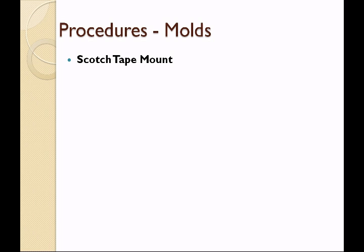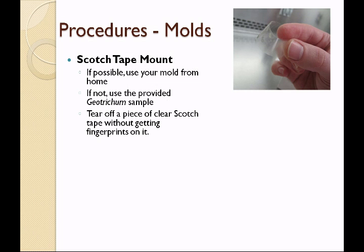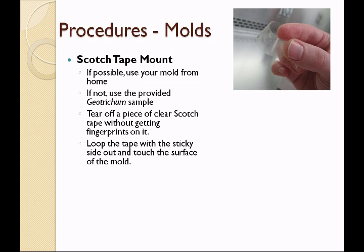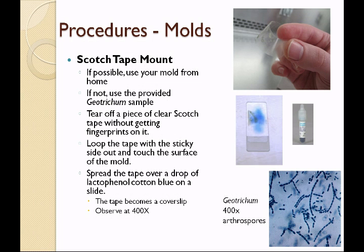You are also going to be preparing a scotch tape preparation. If possible use your mold from home, but if not, you can use the provided sample of geotrichum, which is a very common mold that grows on tomatoes. Tear off a piece of clear scotch tape without getting fingerprints on it, loop it between your thumb and index finger with the sticky side out, and touch it down to the surface of the mold. Put a drop of Lactophenol Cotton Blue on a slide and spread the tape over it so it acts like a cover slip. Observe at 400X — you cannot save this preparation as it will dry out, so prepare it and immediately observe it. At 400X magnification of geotrichum it is very easy to see the arthrospores forming as the hyphae break up into small pieces.